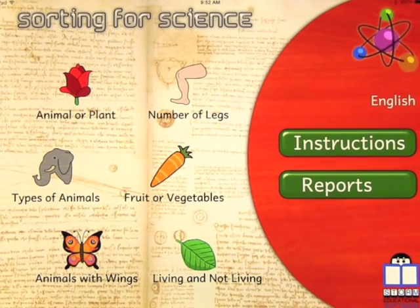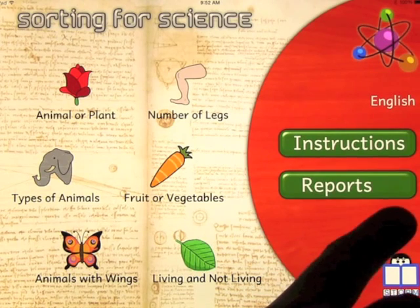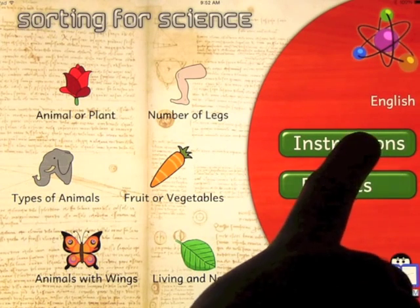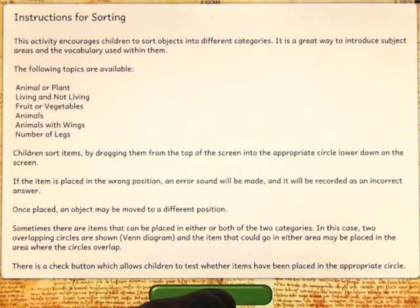We're going to take a look at an app called Sorting for Early Science. This is the screen you come to when you open the app up. I really like the concept of this app and how it works. Let's look at the instructions — once you go in here it'll tell you all about the app and the following topics: animal or plant, living or not living, fruit and veg, animals with wings, and number of legs. It's all about sorting within those categories.